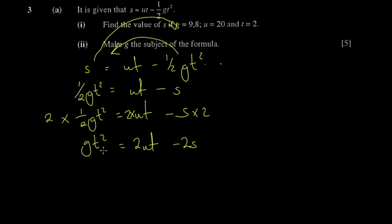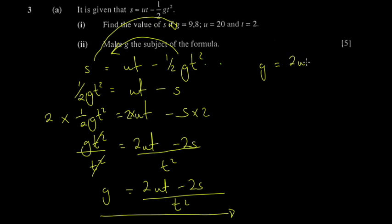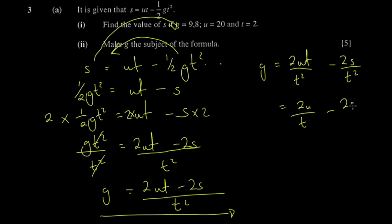Now you divide by t squared on both sides. So you get g equals (2ut minus 2s) over t squared. This is not the only acceptable form. Some students would distribute the denominator: 2ut over t squared minus 2s over t squared, which simplifies to 2u over t minus 2s over t squared. That's also acceptable, but I advise you to stop at the first form — it's clean and neat.